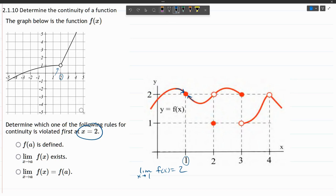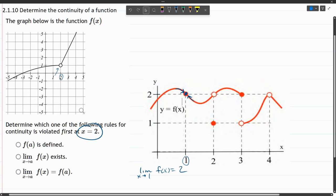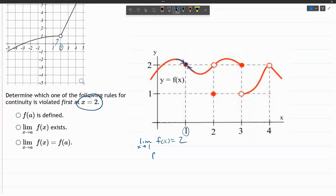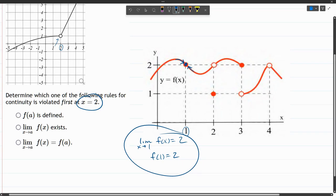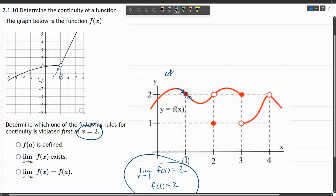Now, the actual y value is the filled in part of this, so also f of one is equal to two. And when both of these exist and are equal, the function's continuous. So we can write continuous at x equals one.